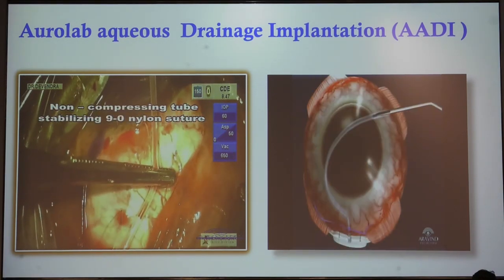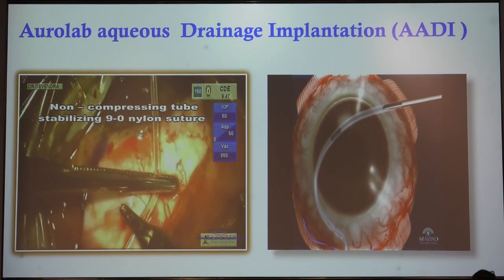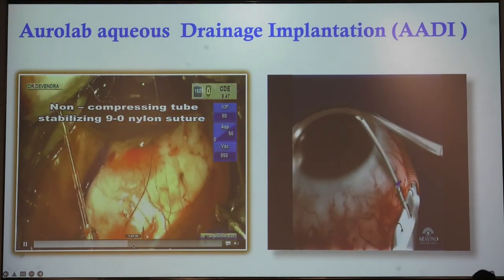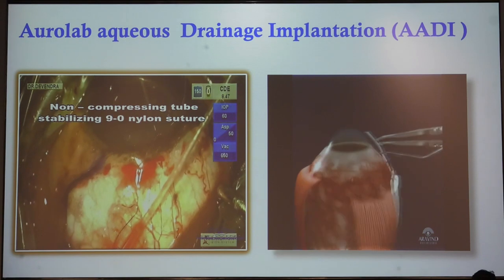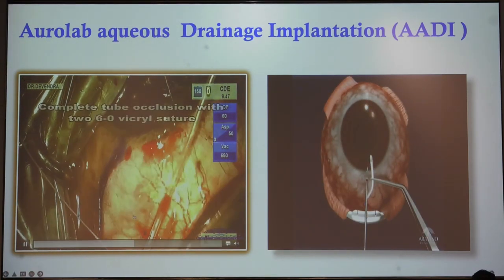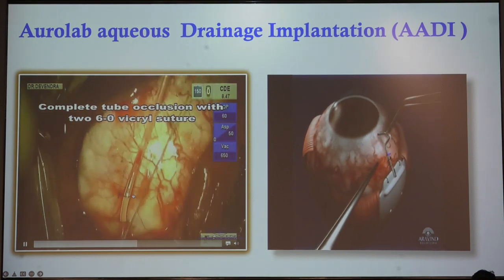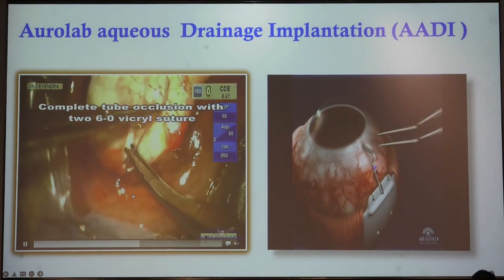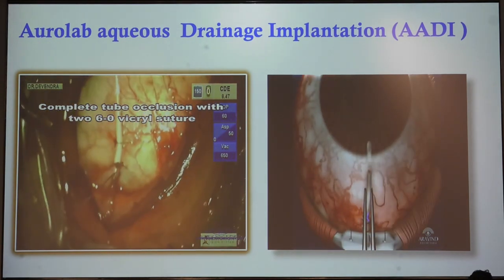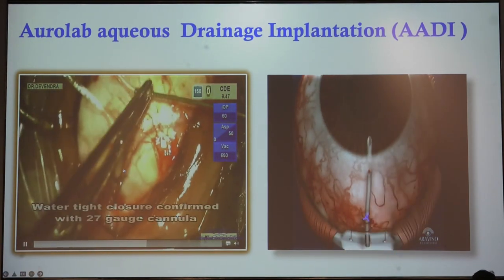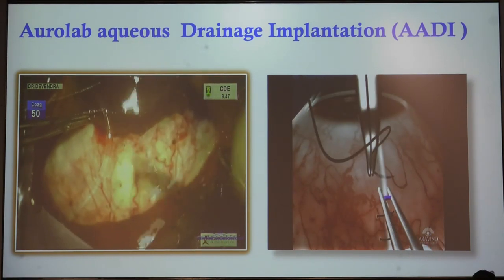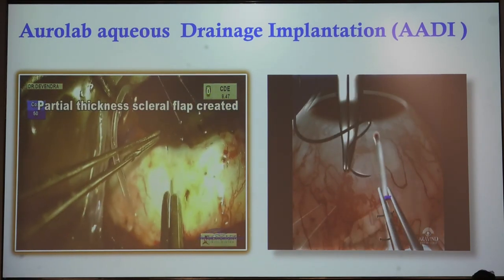The tube has been fixed with a 9-0 nylon box suture — it should not be a compressible suture. After applying this suture, the tube has been occluded using a 6-0 or 7-0 Vicryl suture. Initially we used two Vicryl sutures, but now I use only a single Vicryl suture. The tube is then checked to confirm it is properly blocked.